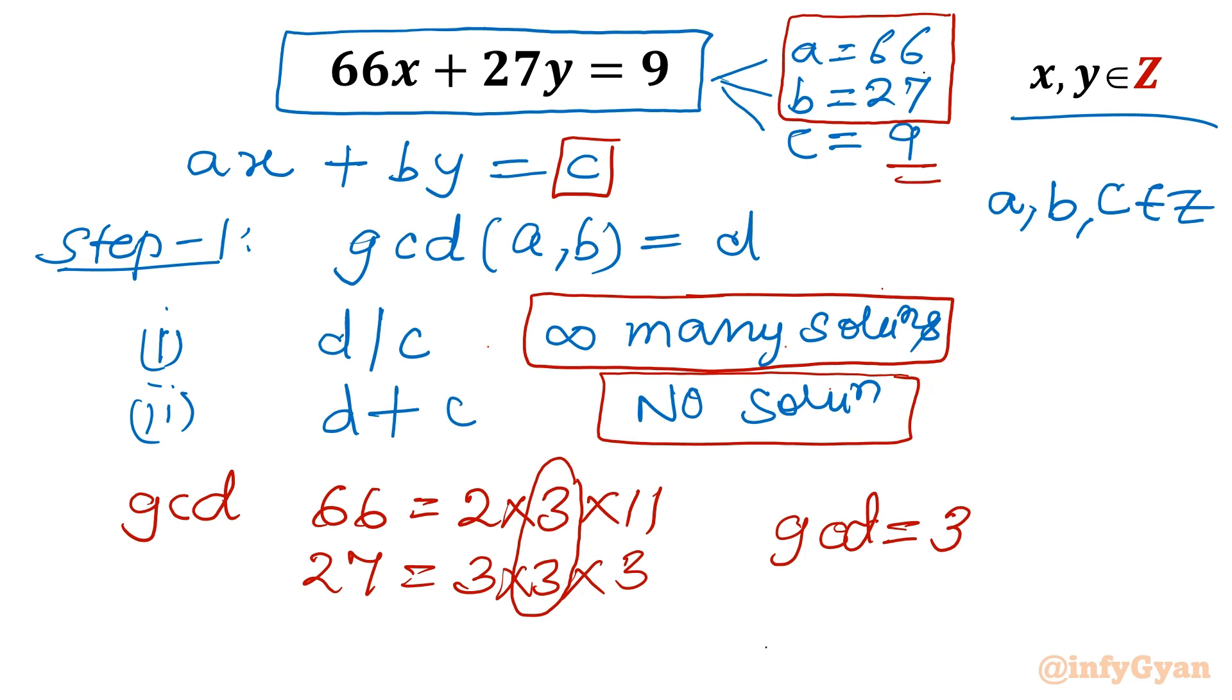So we have to check whether this 3 divides 9 or not. So 3 divides 9, yes. So there will be infinitely many solutions. Now these solutions we will find out in two forms: particular solution and general solution. Let us solve.